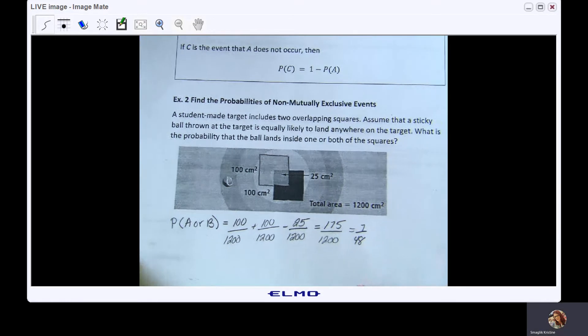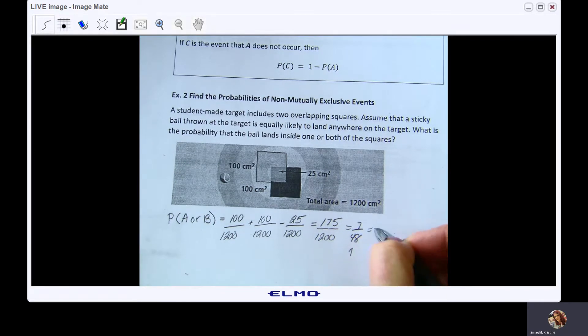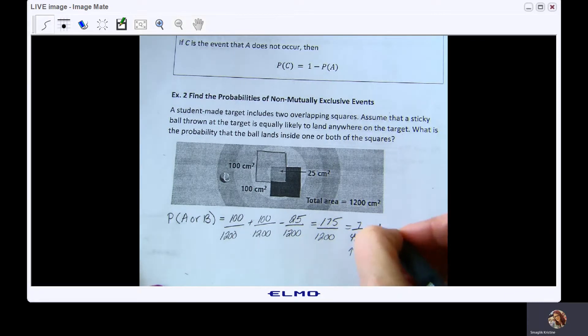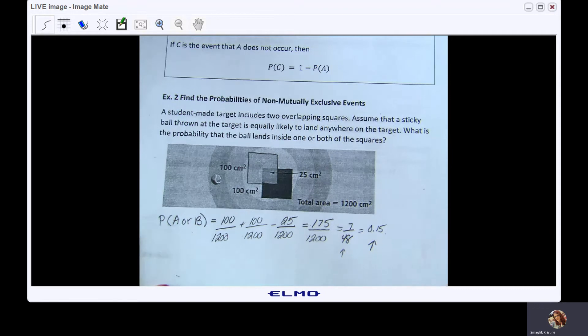And again, I can write this probability as a fraction, 7/48. This is okay. I could also write this, if I do 7 divided by 48, I get 0.15. Totally okay. I can also write this as a percentage, 15%. All three answers are correct and acceptable.